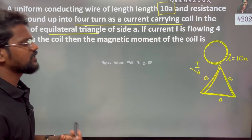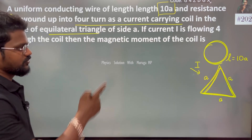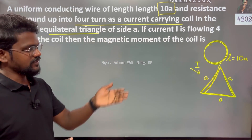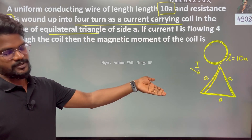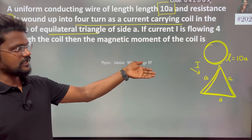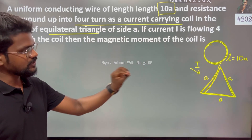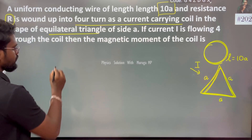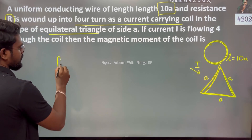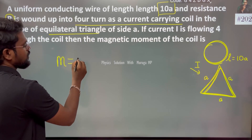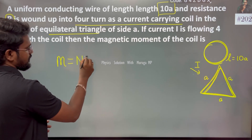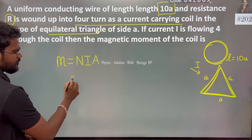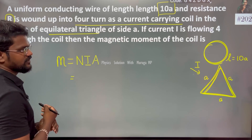We are going to change the circular coil of length 10A into equilateral triangle shape with 4 turns. The magnetic dipole moment is given by M = NIA, where the number of turns is 4 and current is I.